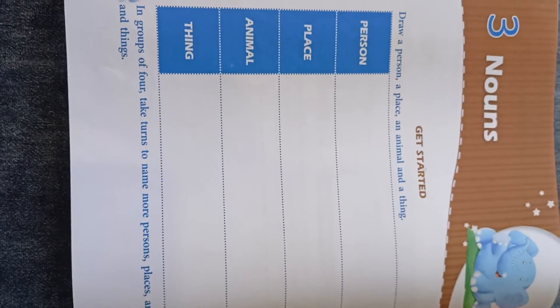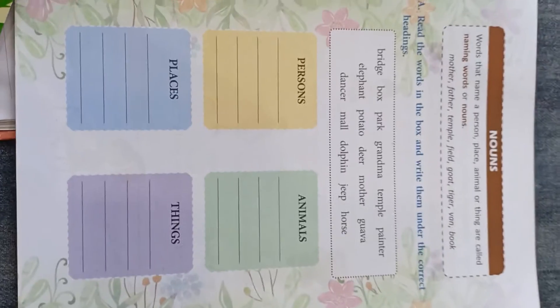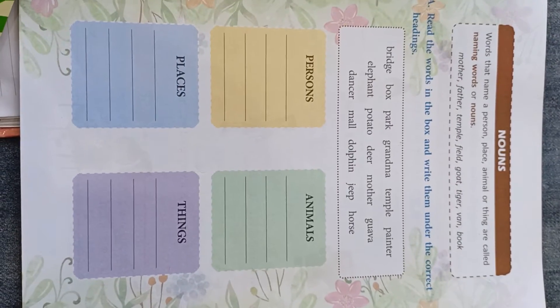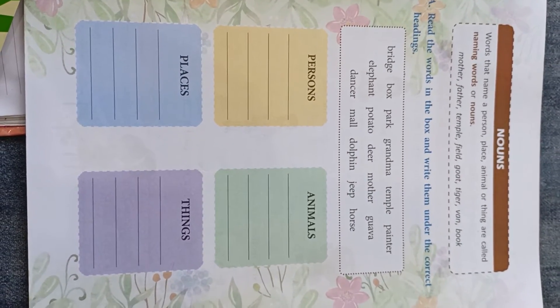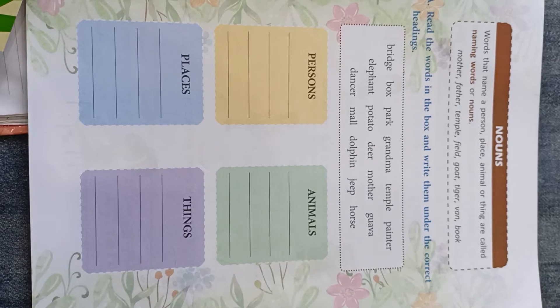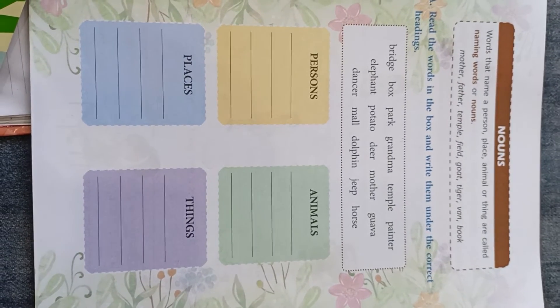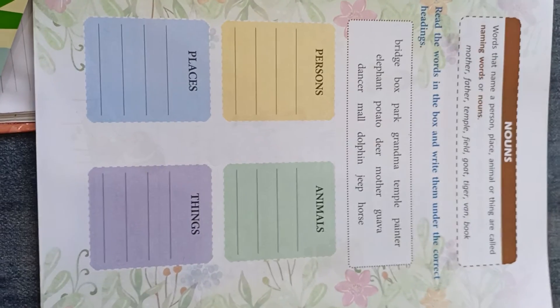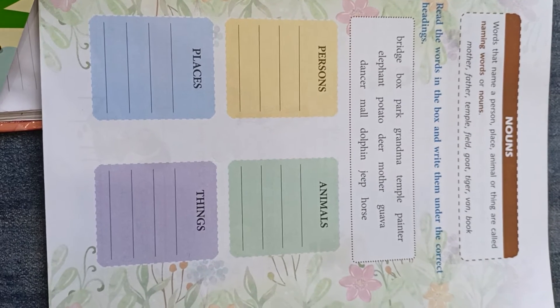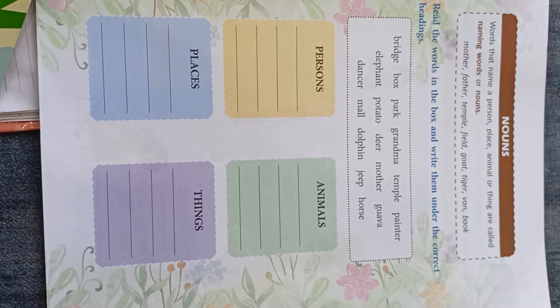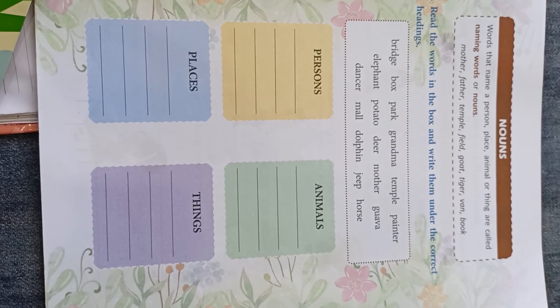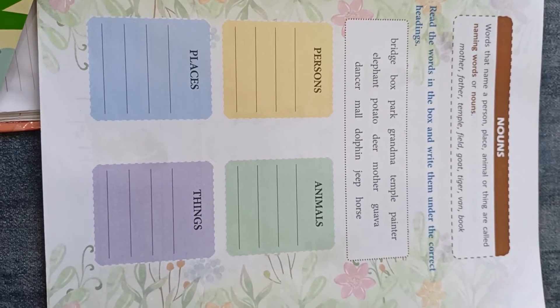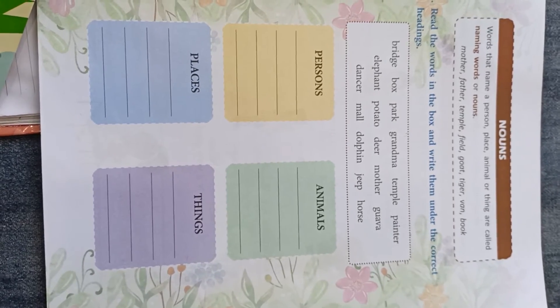You have to learn the definition of noun, which you have on page number 27. Words that name a person, place, animal or thing are called naming words or nouns. For example: mother, father, temple, field, goat, tiger, pen, book.